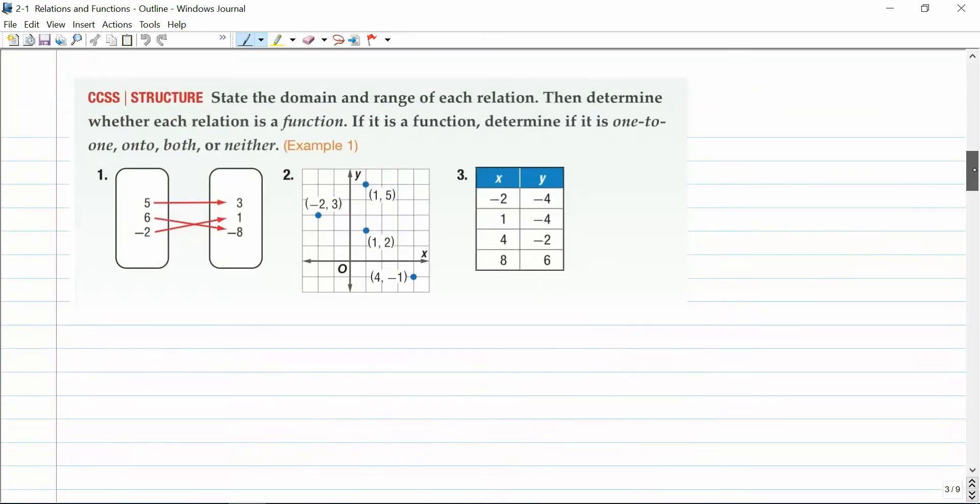So let's take a look at a couple examples here. State the domain and range of each relation, then determine whether each relation is a function. If it is a function, determine if it is one-to-one, onto, both, or neither. So our first example here you'll recognize is a mapping, and you'll see that five is mapped to three, six is mapped to negative eight, and negative two is mapped to one. So the domain of this is going to be the set of elements in the first bubble, or negative two, five, and six.